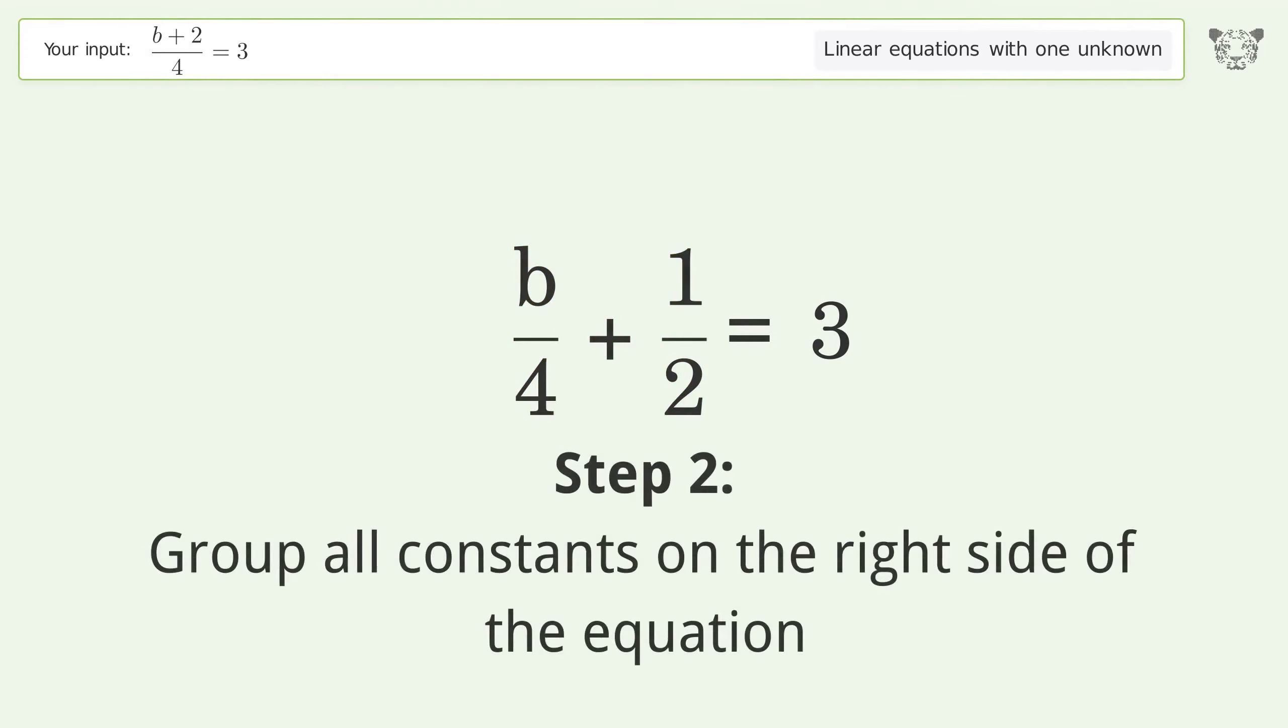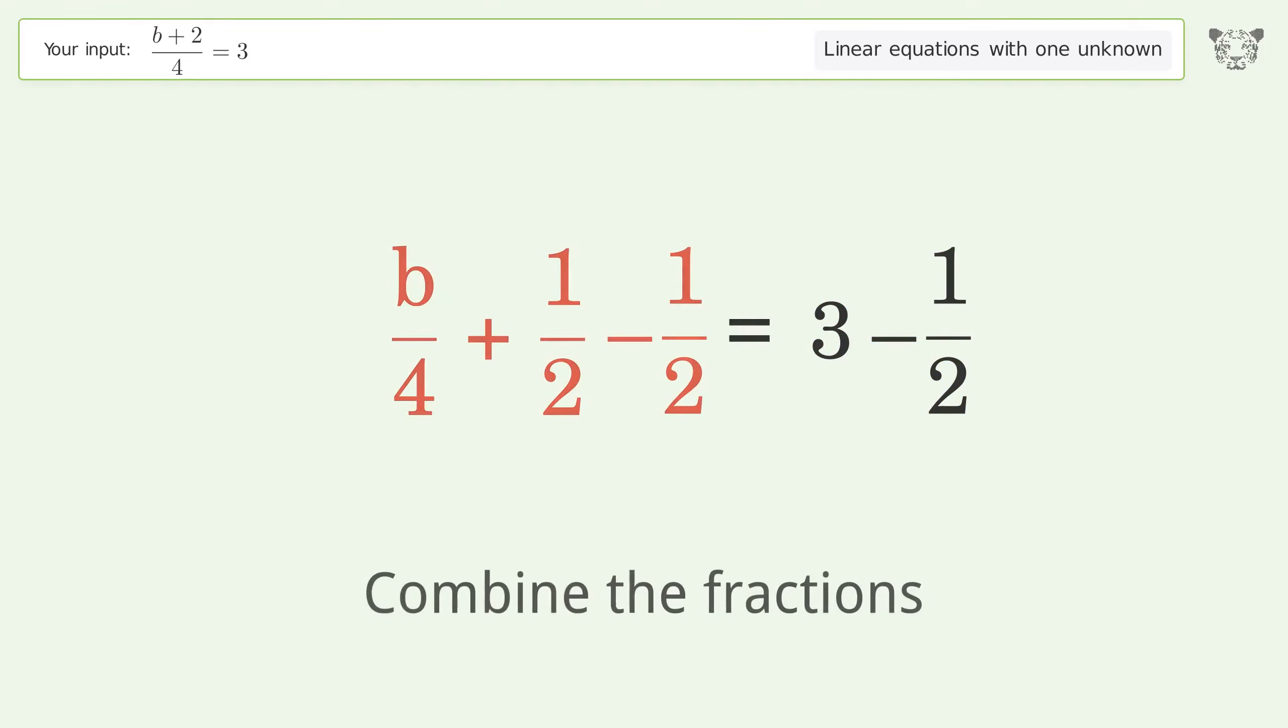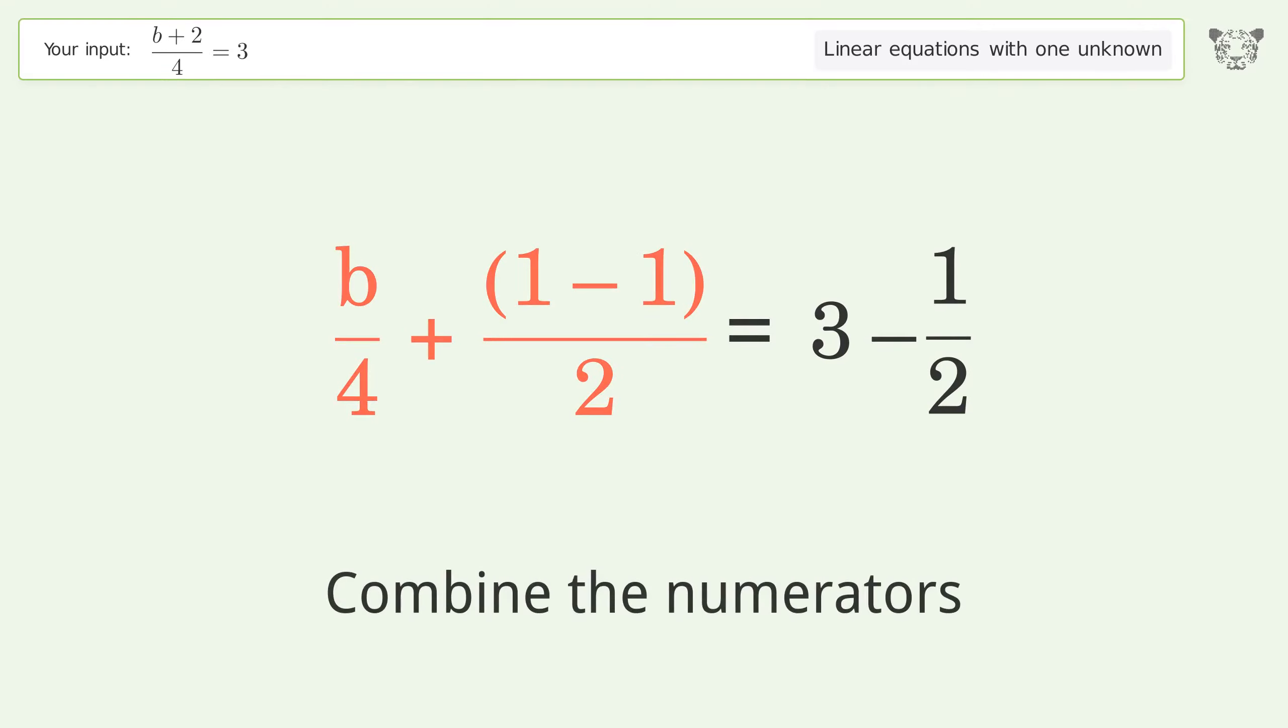Group all constants on the right side of the equation. Subtract 1 over 2 from both sides. Combine the fractions and combine the numerators.